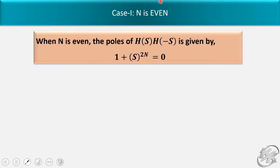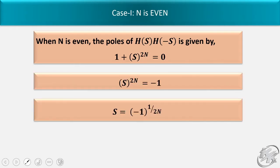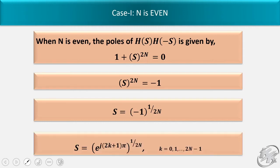Case 1: when n is even. The poles of H(s) and H(-s) are given by 1 plus s^(2n) equal to 0, so s^(2n) equal to -1. Therefore s equal to (-1)^(1/2n). Now -1 is given by e^(j(2k+1)π). So putting that value in the formula, the value of k ranges from 0 to 2n minus 1.